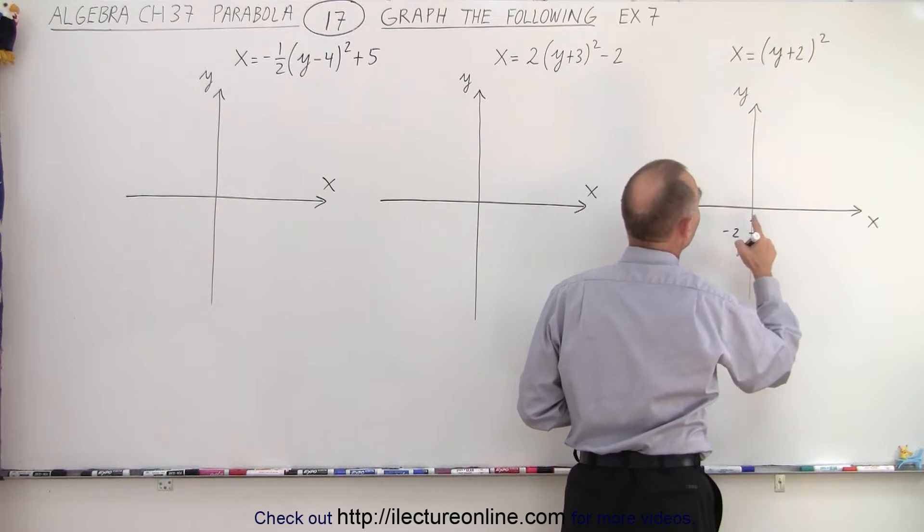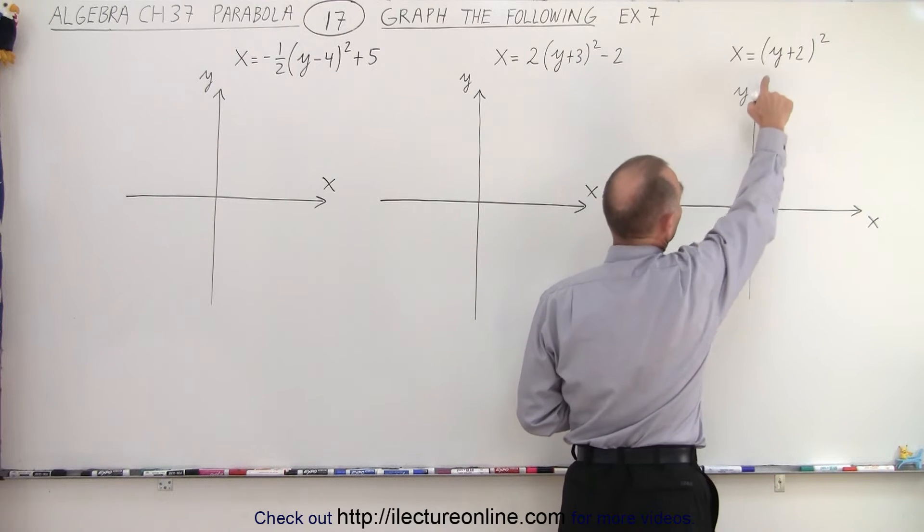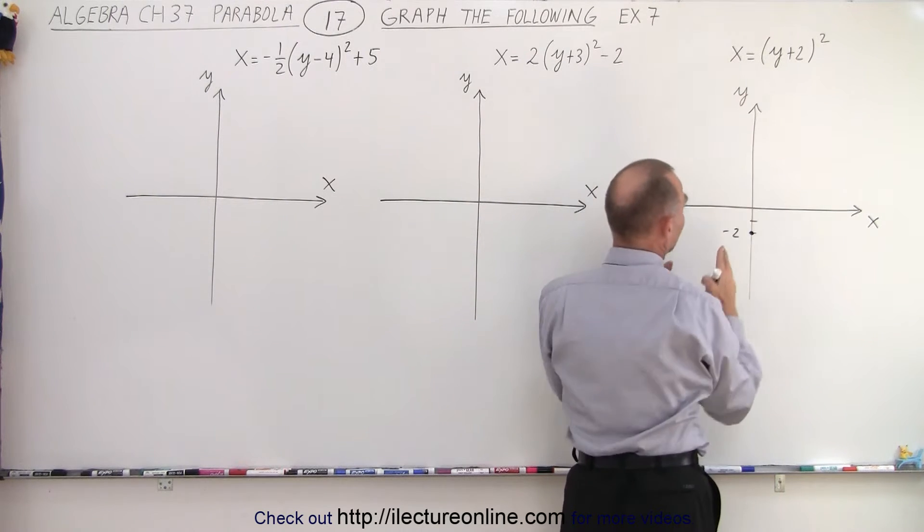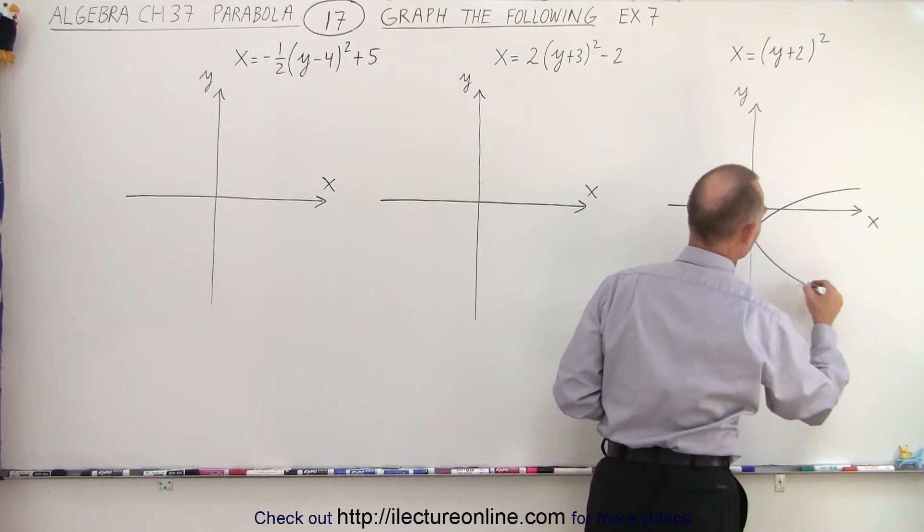So that means we're going to shift it down, 1, 2, negative 2. And there's no shift along the x-axis, so the vertex is over here. And it opens upward or in the positive direction, so it looks something like this.